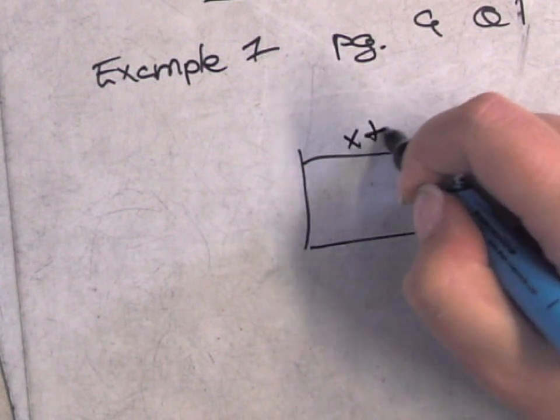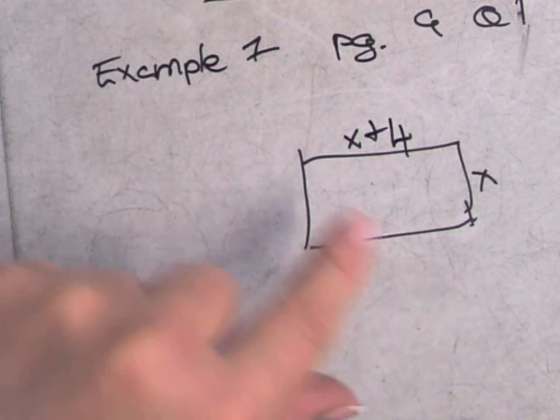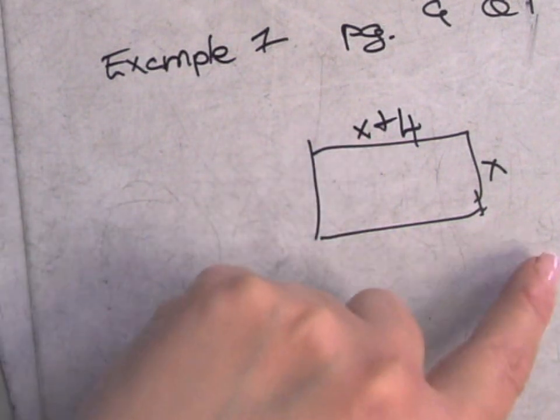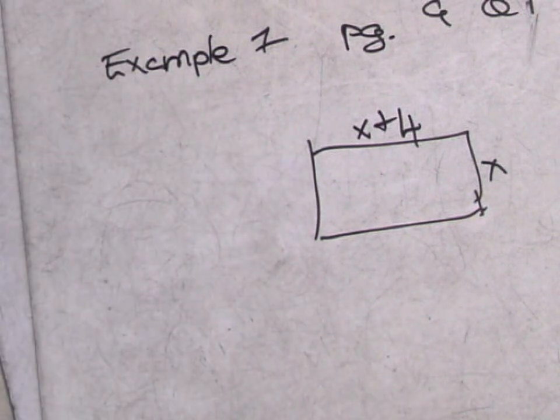Or you could call the long side x and call the short side x minus four, couldn't you? Same thing. And then it says let x be the length of the smaller side.